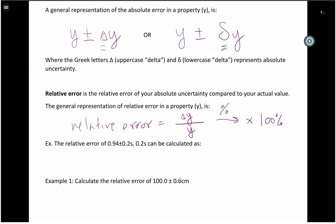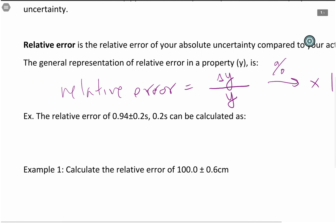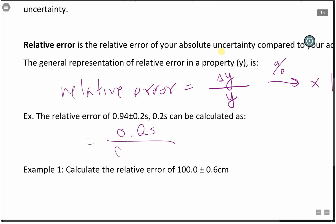But let's do an example just to see how we do it. In this example, we're going to look at calculating the relative error of 0.2 as a part of 0.94. So our relative error is absolute error, we put the absolute error on top, divided by our actual value, which gives us here as 0.21.